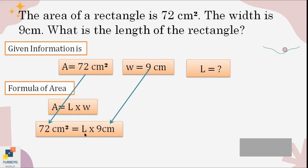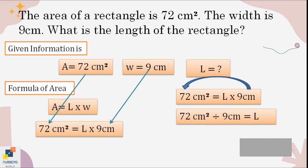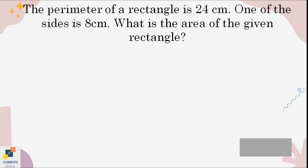L remains as the variable we want to find. We move all values written with L to the other side of the equal sign, taking the inverse of the operation between the value and the variable. Since 9 is multiplied with L, we move it to the other side and the multiplication becomes division. So 72 divided by 9 equals 8 centimeters — that is our missing length.